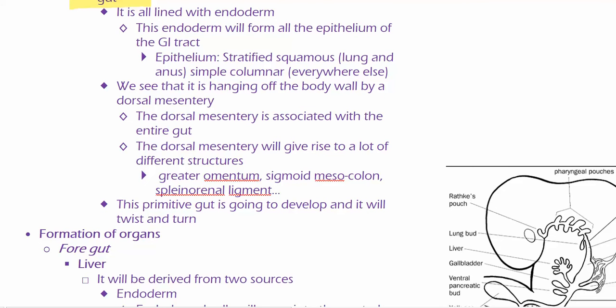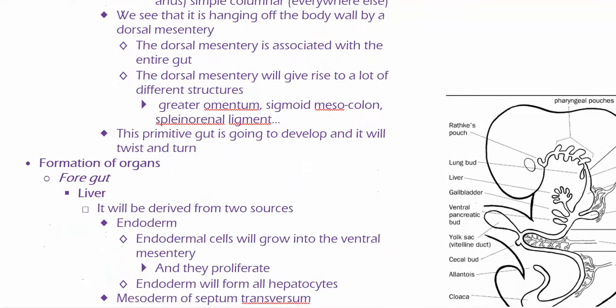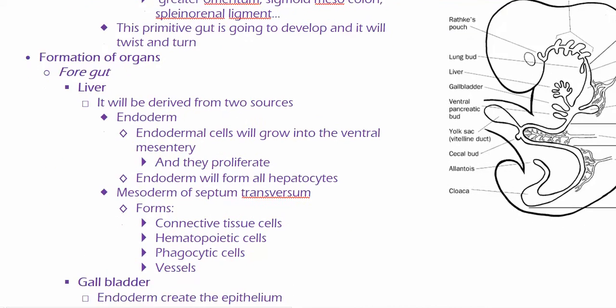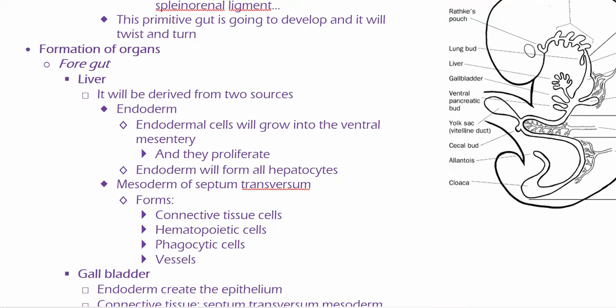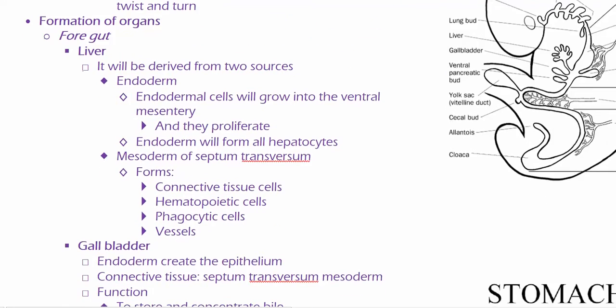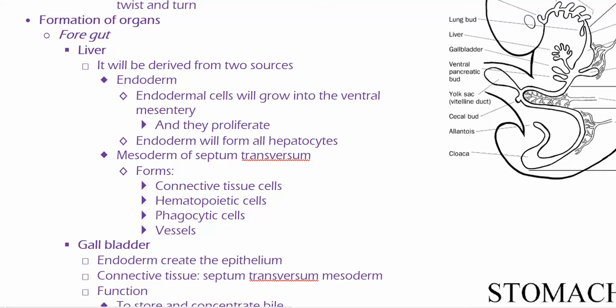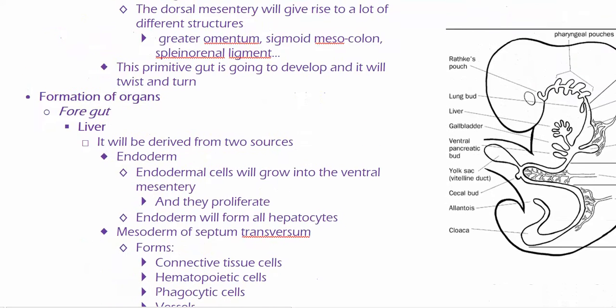The epithelium — where was it stratified squamous? At the distal anus and esophagus. That's right. And then where was it simple columnar? In between those two places.